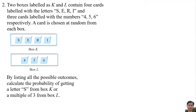Number 2. Two boxes labelled K and L contain 4 cards labelled with the letters S-E-R-I and 3 cards labelled with the numbers 4, 5, 6 respectively. A card is chosen at random from each box. By listing all the possible outcomes, calculate the probability of getting a letter S from box K or a multiple of 3 from box L.